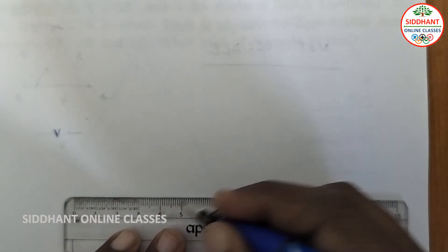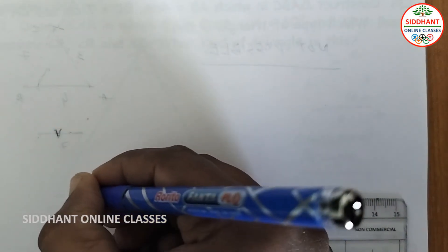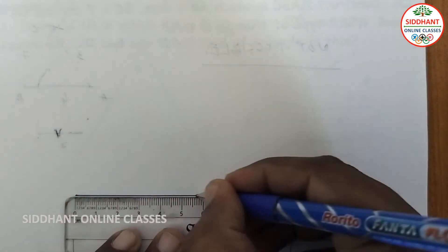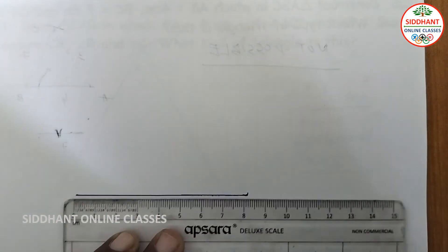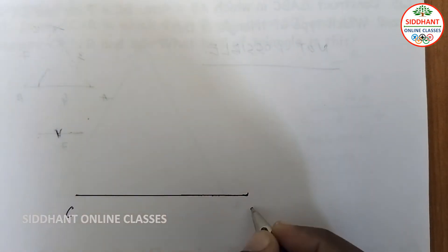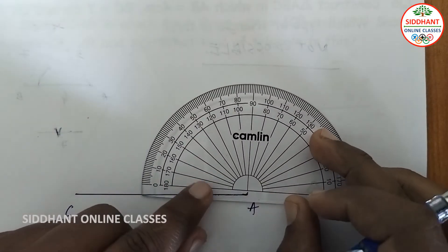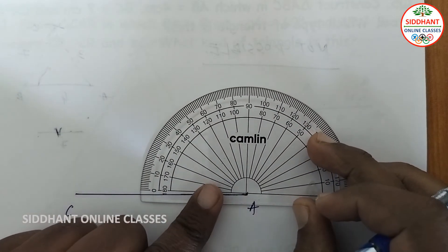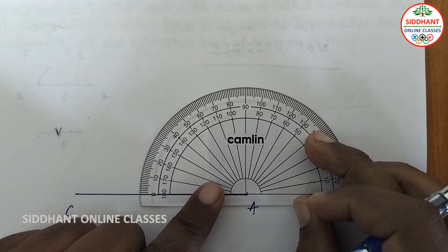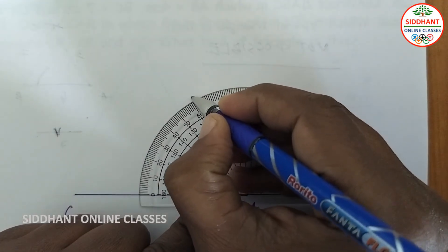First we are going to draw a line with 8 cm. This is point C and this is point A here. With a protractor we are going to draw a 60 degrees angle. So this is 60 degrees.